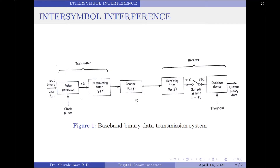We will also assume that the channel is noiseless. Then, the output of the channel is passed through a receiving filter which has a transfer function HR(f). This filter output, y(t), is then sampled synchronously with the transmitter, with the sampling instances being determined by a clock or timing signal that is usually extracted from the receiving filter output.